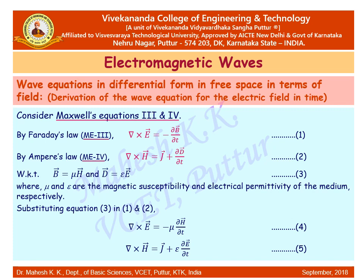Let us derive the wave equations in differential form in free space in terms of the electric field. Consider Maxwell's equations 3 and 4: del cross E = −∂B/∂t and del cross H = J + ∂D/∂t. Using the fundamental relations B = μH and D = εE, substituting into equations 1 and 2, we get: del cross E = −μ ∂H/∂t, and del cross H = J + ε ∂E/∂t.